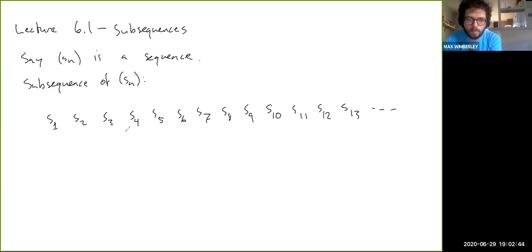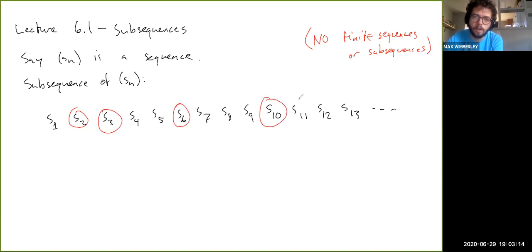And of course, remember that sequences in our world always have to be infinite. So there's no such thing as a finite subsequence. No finite sequences or subsequences. I mean, subsequences are sequences in their own right. So one subsequence would be, you know, if I could take S2, and like S3, and maybe S6, and S10, S11, and so on, then this was SK.